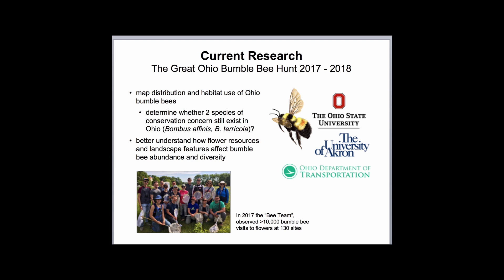The project was initiated and funded by the Ohio Department of Transportation in response to the listing of one of our bumblebee species, Bombus affinis, or the rusty patch bumblebee, on the federal endangered species list last spring. The primary goal of the survey is to determine whether two bumblebee species of conservation concern still exist in Ohio: Bombus affinis, the rusty patch bumblebee, and Bombus taricula, the yellow-banded bumblebee.